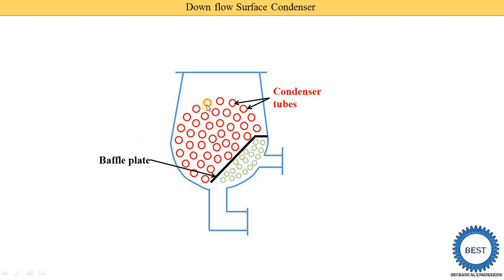For example, consider a one meter square area in the upper section — there are eight tubes. In the lower section, within one meter square there are more tubes, greater than eight. This lower section is called the air cooling section.